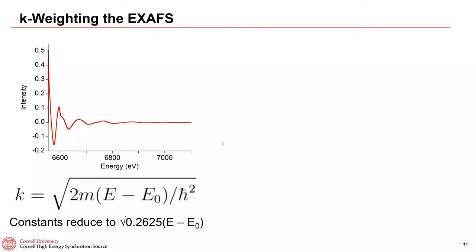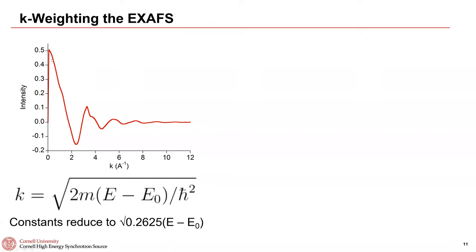Even after spline removal, this still doesn't look like published EXAFS. One reason is that the x-axis is still in energy. Published EXAFS always uses an axis called k, calculated as the square root of 0.2625 times (E − E₀), where E₀ is the edge energy. Being a square root function, it stretches out the low-energy EXAFS and compresses the high-energy EXAFS. Converting to k gives you that characteristic stretching at low k and compression at high k.